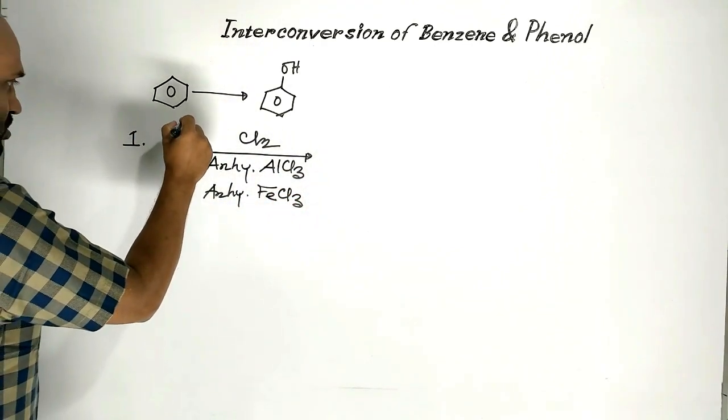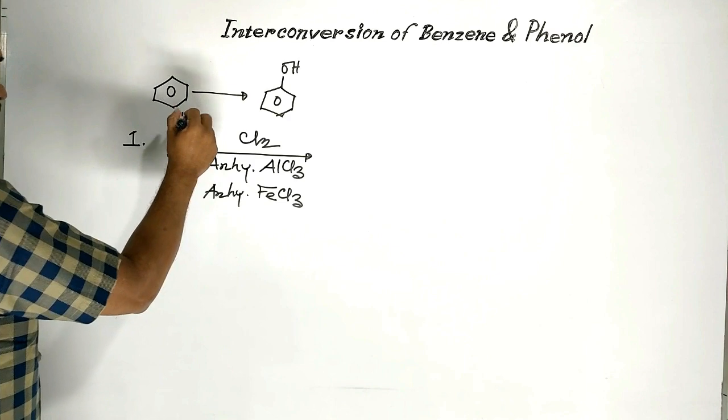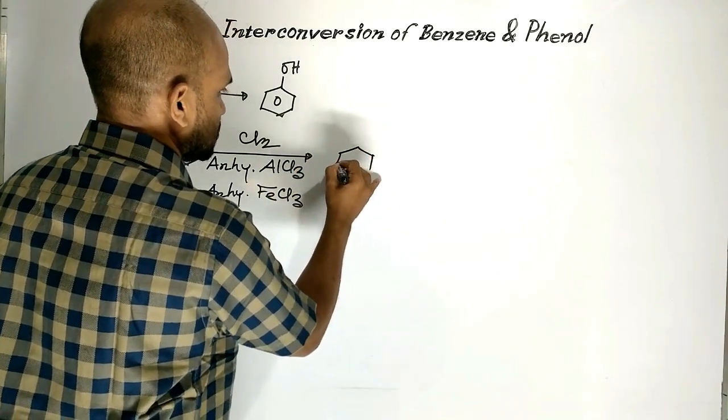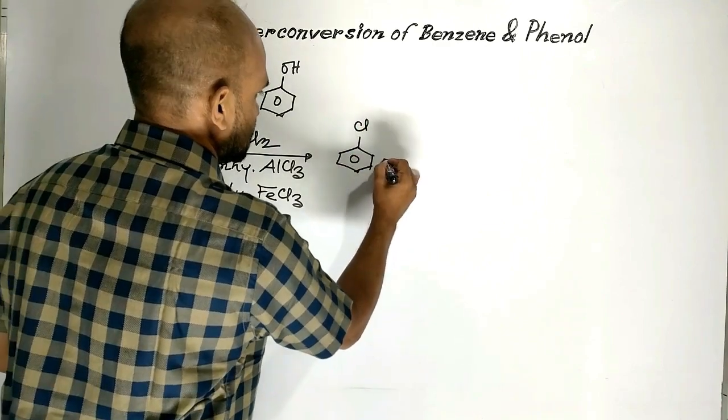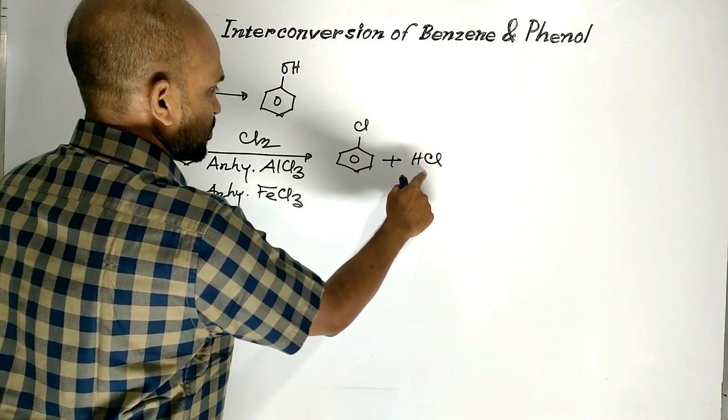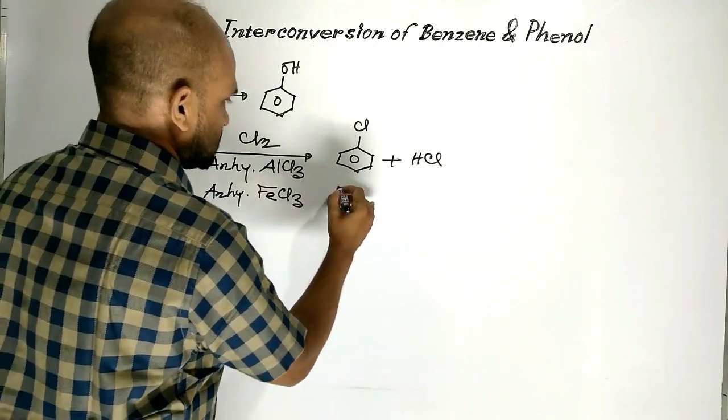Then one hydrogen atom of benzene is replaced by chlorine to form this compound. HCl is by-product. This is chlorobenzene.